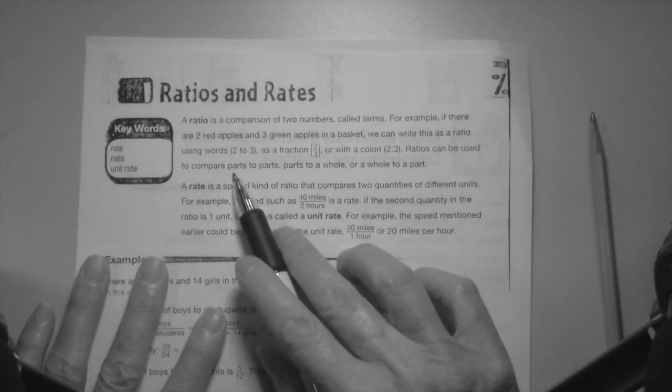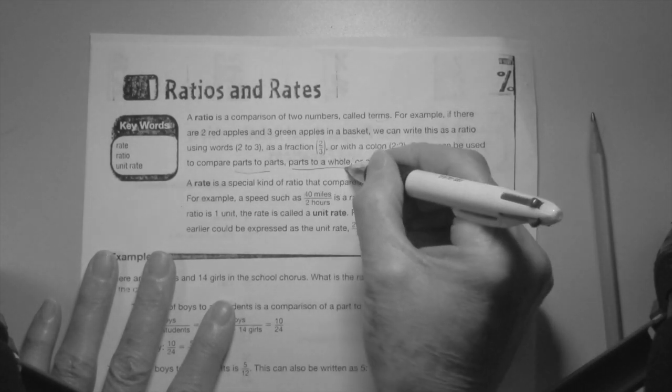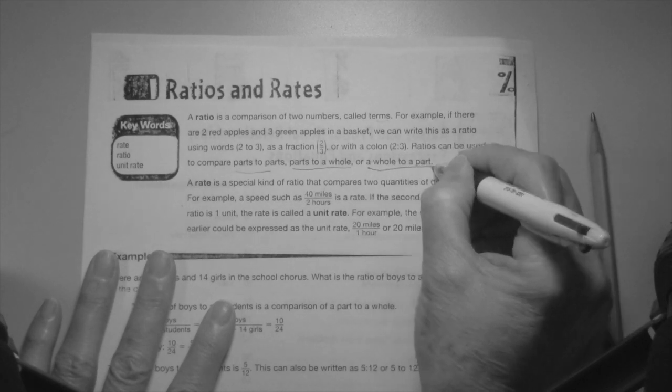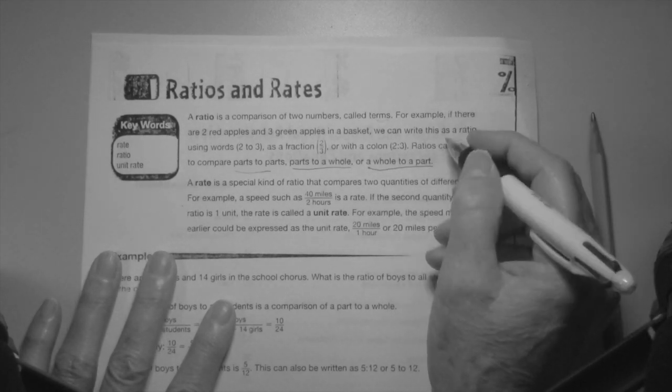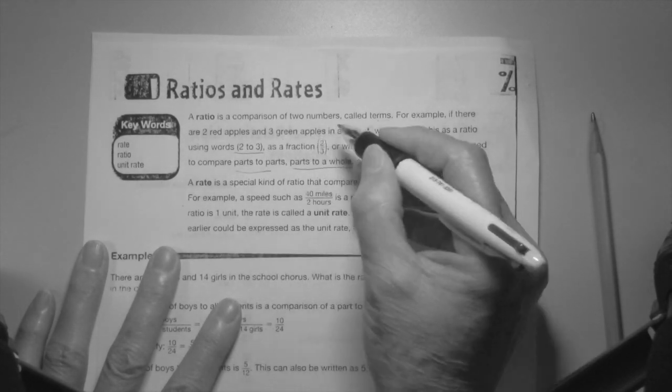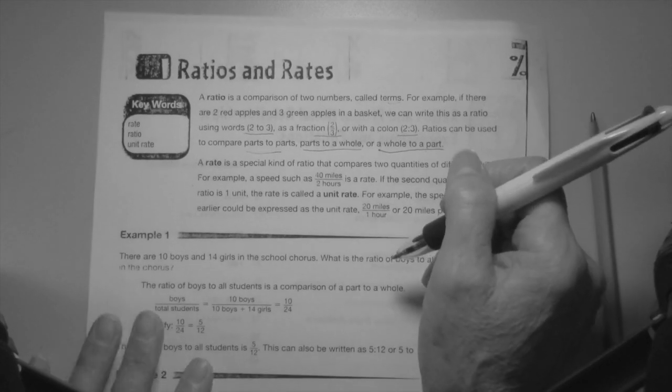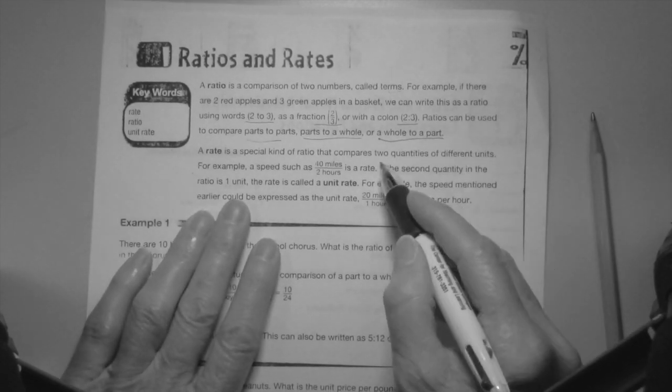Ratios can be used to compare parts to parts, parts to a whole group, or a whole to a part. Three different ways of setting up a ratio, three different ways of writing a ratio. All the same, they all mean the same.